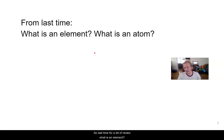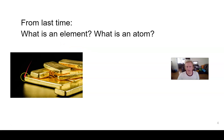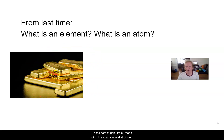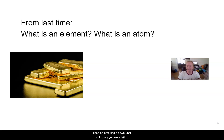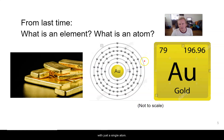So last time, for a bit of review — what is an element, what is an atom? An element is like gold here. These bars of gold are all made out of the exact same kind of atom, and that's what makes this elemental gold. It's all made out of the same exact stuff. And if you took one of these gold bars, you could break it in half, then break that in half, just keep breaking it down until ultimately you are left with just a single atom.